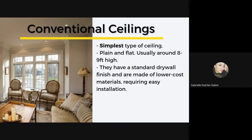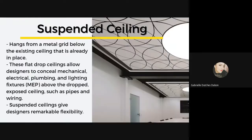Now let's move on to the two types of ceilings. The first type is the conventional ceiling. A conventional ceiling construction type is commonly found in houses. These ceilings have a standard drywall finish and are made of lower cost materials. Conventional ceilings are plain and flat, usually between eight to nine feet high, and can fit with typical construction material sizing.